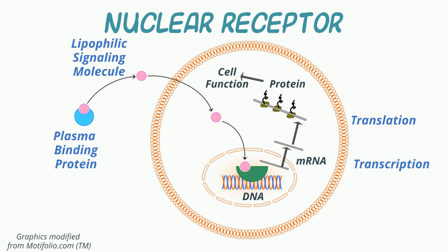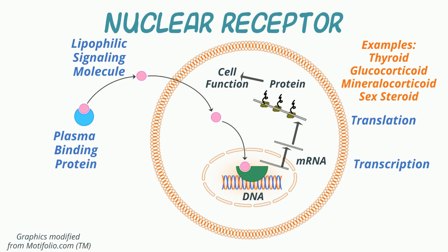Some of the most common examples of these are the lipophilic hormones like thyroid and steroid hormones. Regardless of the type of receptor, both receptor and signal transduction systems can adapt to the chronic agonist stimulation or, in some cases, lack of stimulation of the system, as seen during antagonist administration or depletion of endogenous agonists.